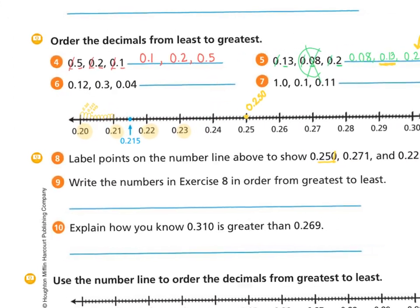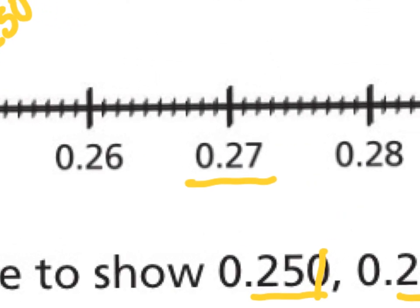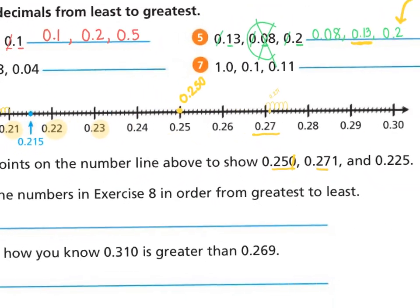My next one is 271 thousandths. First I'm going to look for 27 on the number line — I see it right here — and then go over one more to 271, just like we counted before. So from 27 I count to 271 and place my dot there. I could keep going: 272, 273, 274, 275, and so on. You're just breaking down that penny into little tiny pieces.